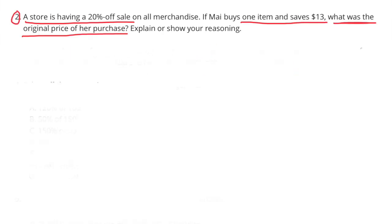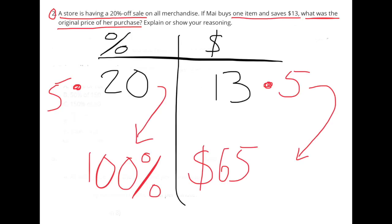Number 2: A store is having a 20% off sale on all merchandise. If Mai buys one item and saves $13, what was the original price of her purchase? I take 20% and multiply it times 5 to get 100%, and I have to multiply the $13 times 5, which gets me $65. 100% of the original price is $65.